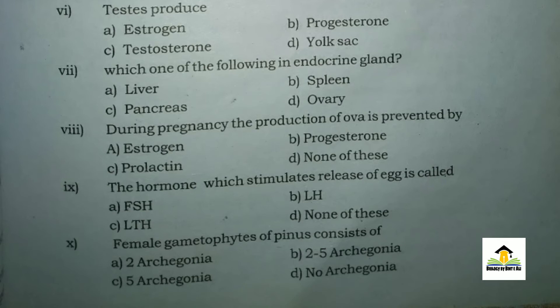MCQ number eight: During pregnancy, the production of ova is prevented by — A: estrogen, B: progesterone, C: prolactin, D: none of these. The right answer for this MCQ is B: progesterone.